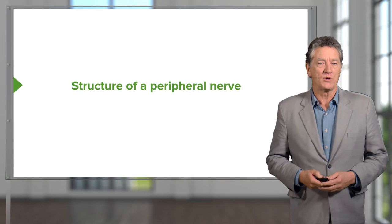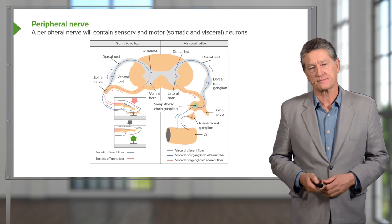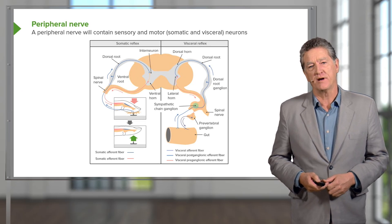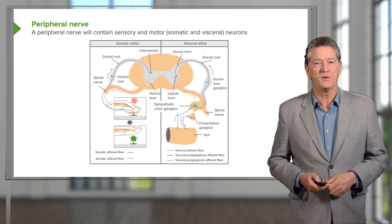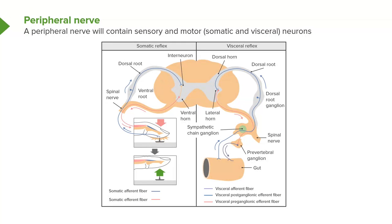Let's now look at the structure of a peripheral nerve. Here is a diagram showing you a section through the spinal cord. The spinal cord is in the middle of the diagram. It has two components — one is coloured yellow, that's the outer white matter, and the internal butterfly or H-shaped structure is called the grey matter.